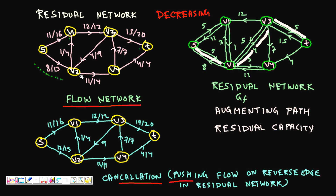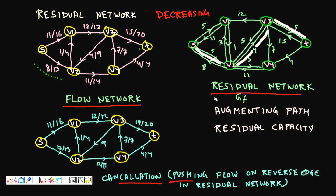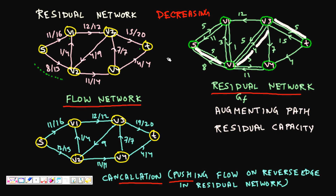For v2 to v4 with flow 11 out of 14: residual capacity is 3 forward and 11 backward from v4 to v2. For v3 to t with flow 15 out of 20: residual capacity is 5 forward and 15 backward. For s to v2 with flow 8 out of 13: residual capacity is 5 forward and 8 backward. This is how the residual graph G_f is constructed.